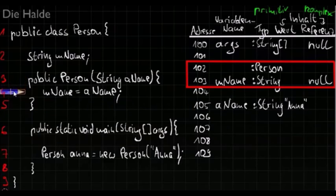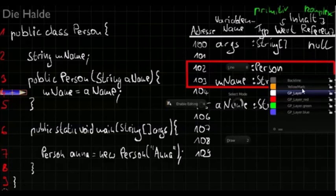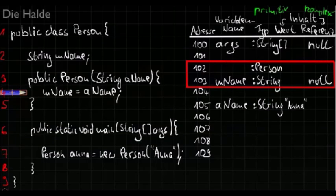So far we reserved the transfer parameter aname in the memory. Now we are ready to execute the next line. Line 4 does the following: mname equals aname. The variable aname has the value Anna. So the value of mname is also Anna now. Therefore we switch to the value column. Now we are ready with line 4 so we go further to line 5.